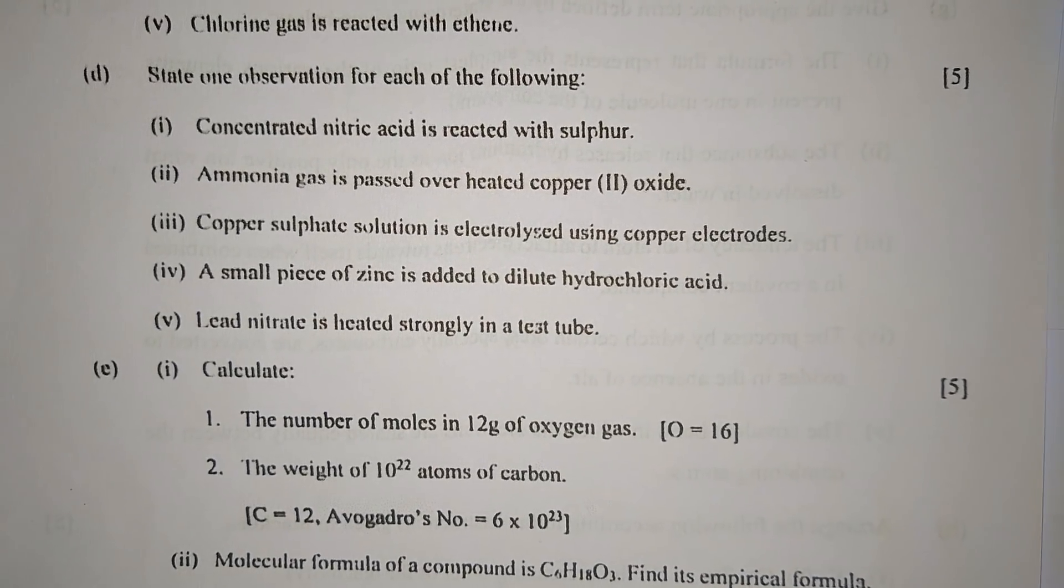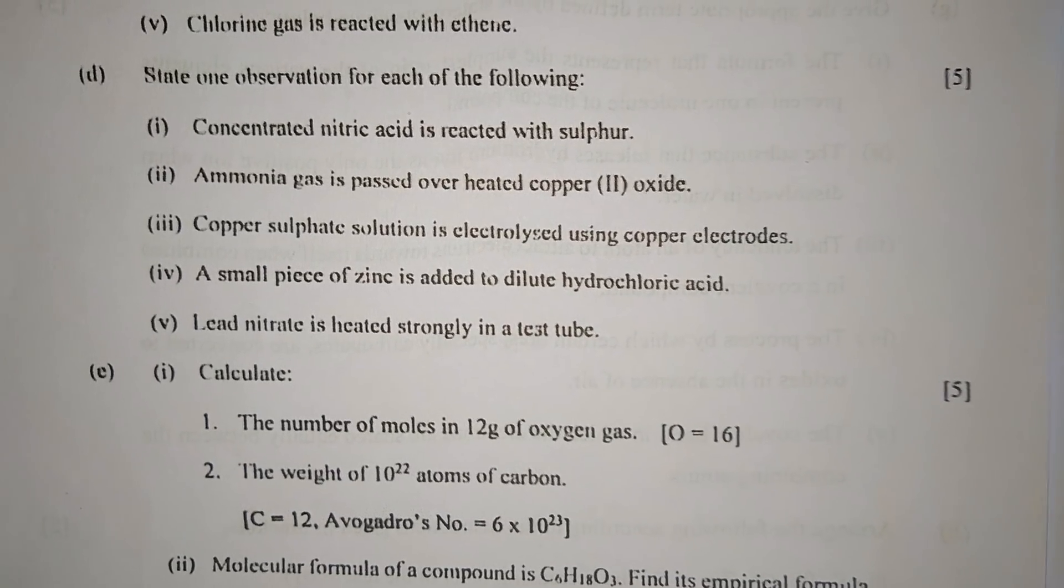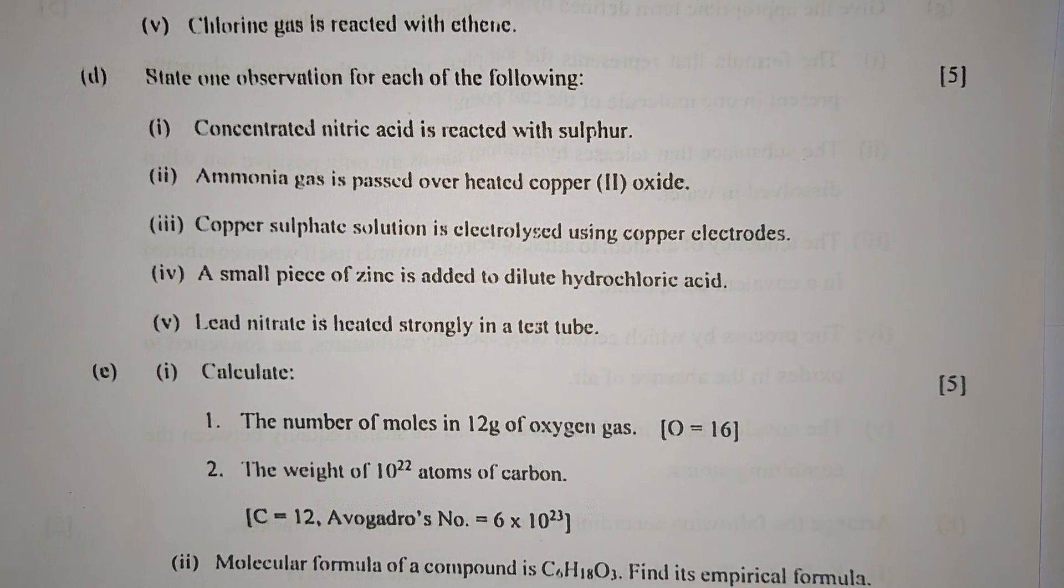Number four: A small piece of zinc is added to dilute hydrochloric acid. When zinc is added to dilute hydrochloric acid, by the property of metal, that is when they react with dilute acid, hydrogen gas is evolved.